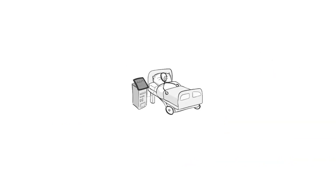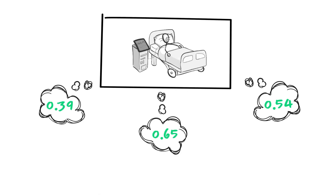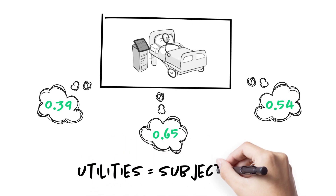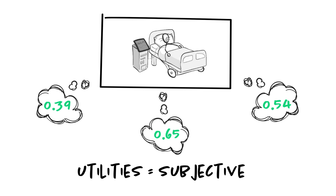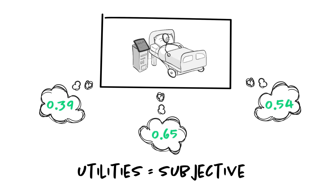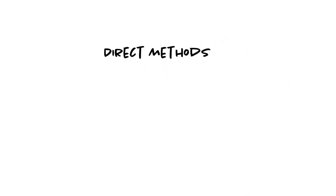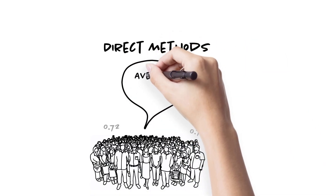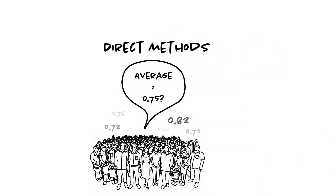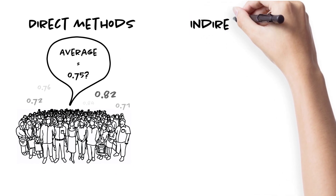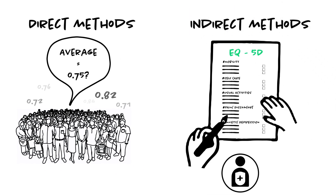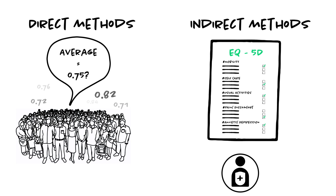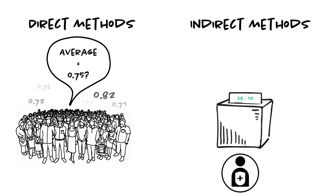Utility values are subjective, as utility can be seen as a perception of quality of life at a certain point in time, meaning it is not easy to derive. But there are several methods frequently used. We have direct methods, generally inferring health state utility values from choices made by individuals between alternative lifetime health profiles. We also have indirect methods involving the use of questionnaires.